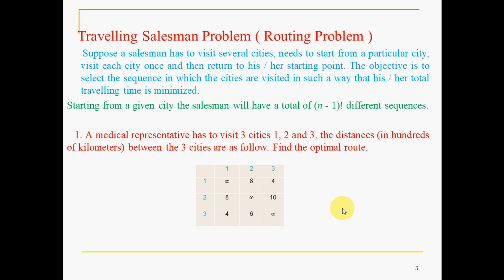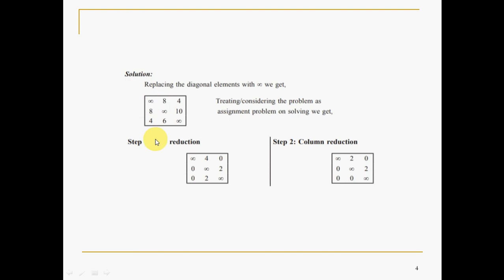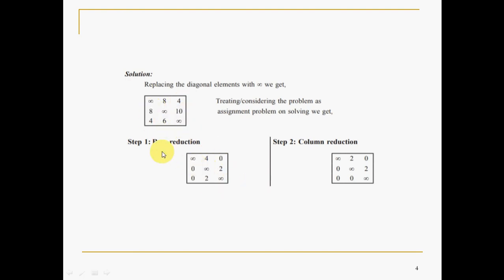Now let us recall the Hungarian Assignment Method. The first step is row reduction: identify the least element in each row and subtract it from all other elements. For example, 4 is the least in the first row, so 8 minus 4 equals 4, and 4 minus 4 equals 0. The same is done for other rows. The second step is column reduction: do the same for all columns. Once reduced row-wise and column-wise, the result is called the reduced matrix, which is ready for allocations.